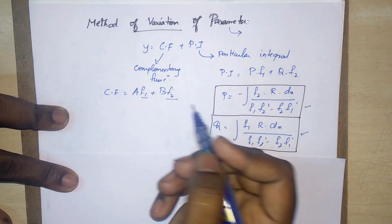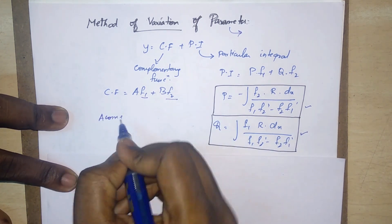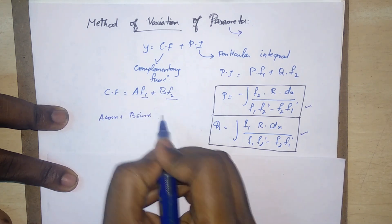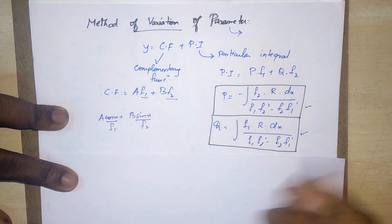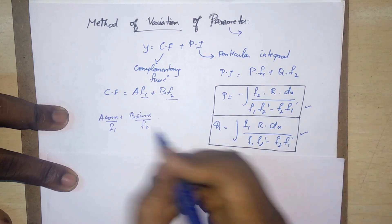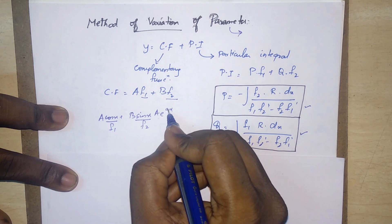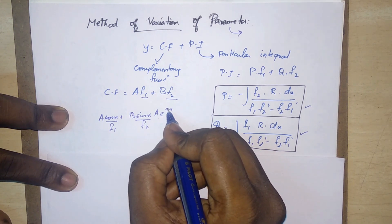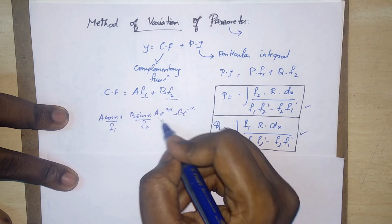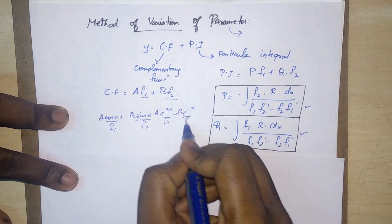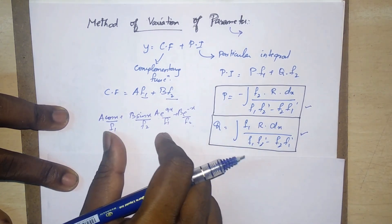For example, if the complementary function is a·cos(x) plus b·sin(x), then f1 = cos(x) and f2 = sin(x). This is the basic setup for the method.